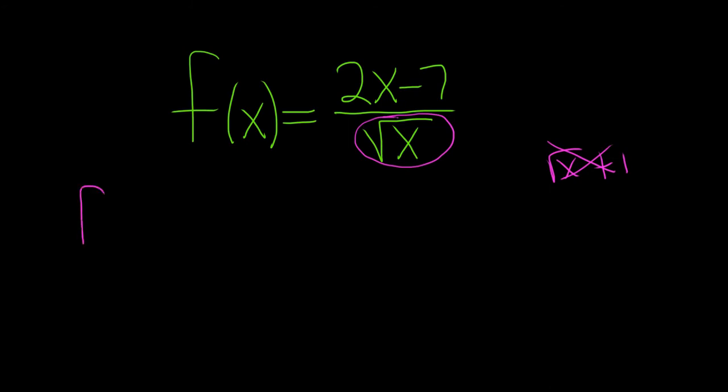We'll start by rewriting our function. So f(x) equals 2x minus 7, and the square root of x can be written as x to the 1/2. So that's a good first step.